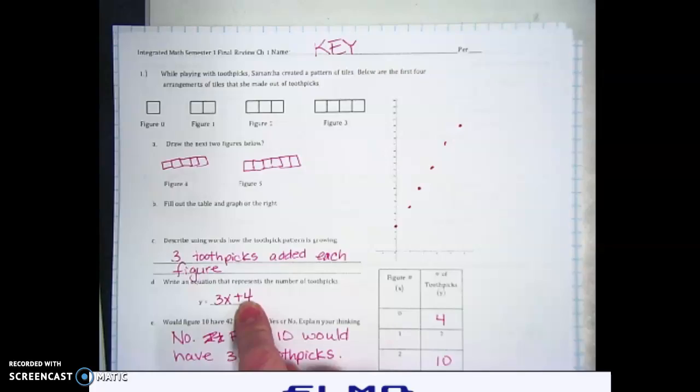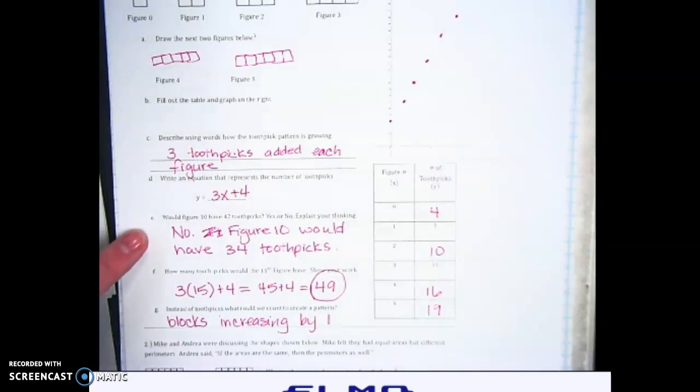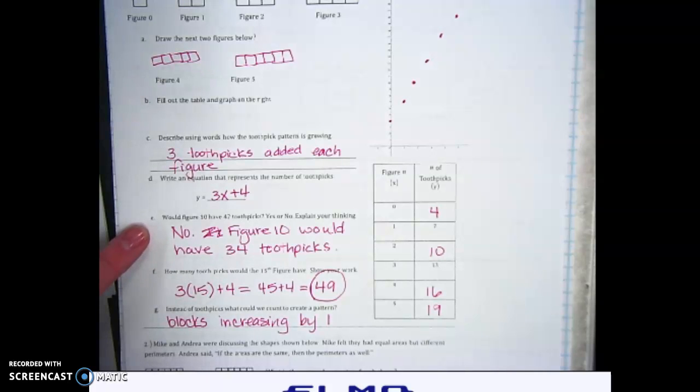So you could make an equation that says y equals 3x plus 4. Question E says, would figure 10 have 42 toothpicks? Yes or no? I said no. Figure 10 would have 34 toothpicks.